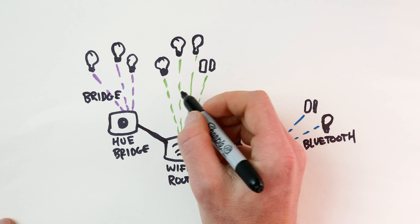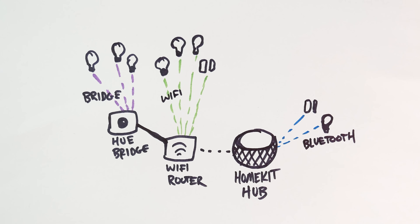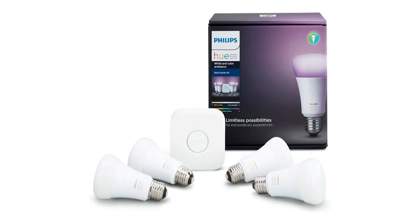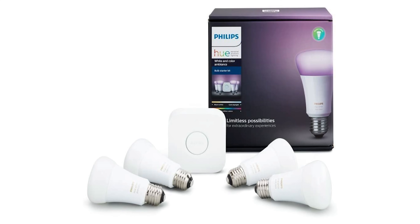In my HomeKit 101 video, we discussed the different ways that HomeKit products can connect to HomeKit. HomeKit accessories either support Bluetooth, Wi-Fi, or use a bridge in order to utilize something like Zigbee. And since the release of the HomePod mini, HomeKit devices can now connect via Thread as well. So essentially Thread is just another wireless protocol to connect our smart accessories to HomeKit — but it is kind of unique in a few different ways.